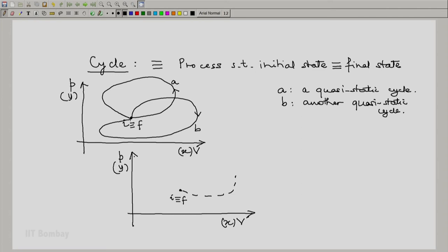the system takes some process but no state during that cyclic process is a state of equilibrium. So here is the depiction of a non-quasi-static cycle.